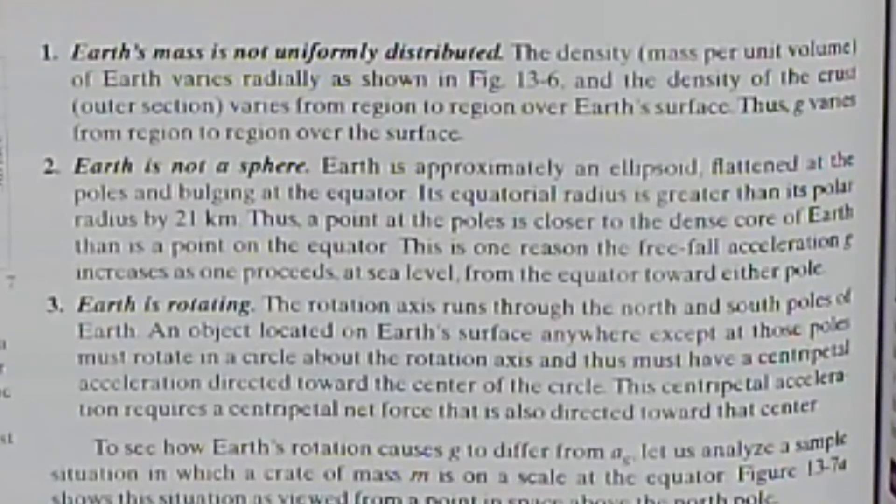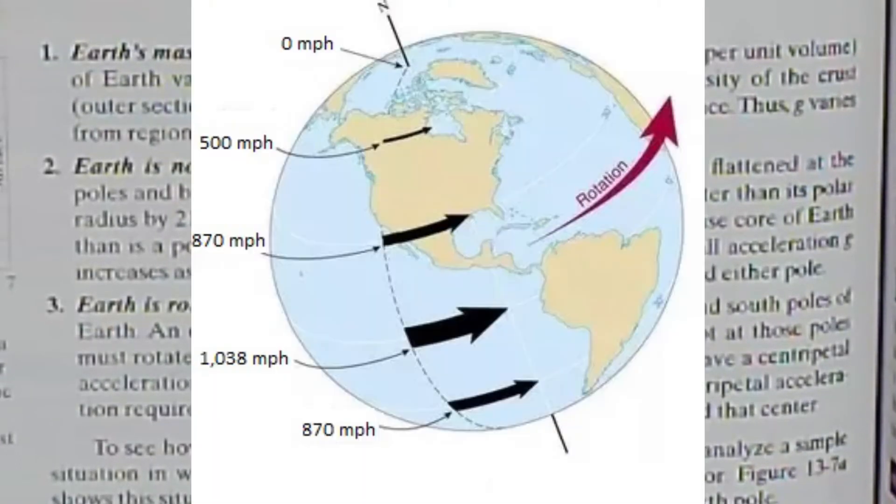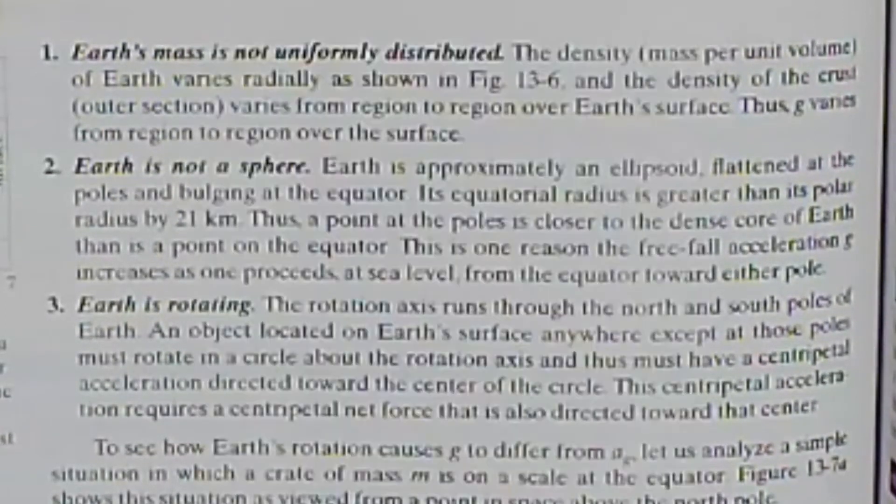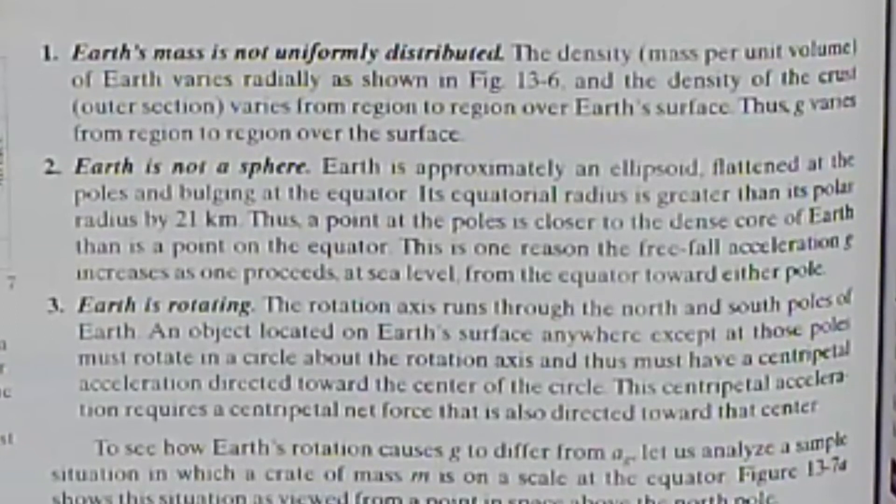And the last reason, Earth is rotating. The rotation axis runs through the north and south poles of Earth. An object located at Earth's surface anywhere except at those poles must rotate in a circle about the rotation axis and thus must have a centripetal acceleration directed toward the center of the circle. This centripetal acceleration requires a centripetal net force that is also directed towards the center.